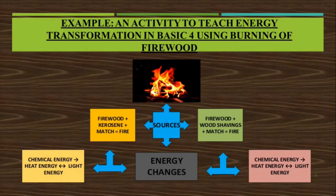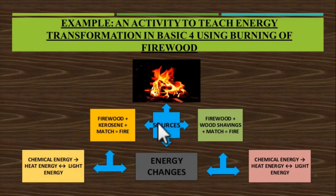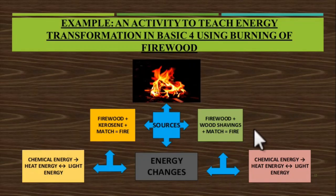Let's look at this example of burning firewood. In the chart or picture, you see firewood burning to give light or fire. The source has many arrows, indicating that there are many things that can contribute to lighting the fire. Your constituents could be firewood and kerosene — you can use a match to create fire — whereas another approach would use firewood, wood shavings, and a match with no kerosene.